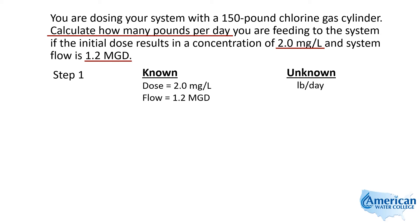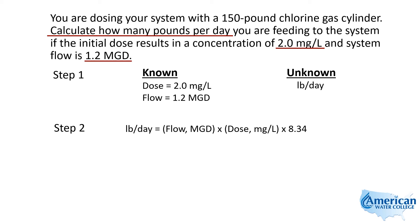Step two: we're going to use the formula that will solve this for us, and that's our pounds formula. The pounds formula says pounds per day is equal to our flow in MGD — million gallons per day — times the dose in milligrams per liter, times 8.34, which is how much a gallon of water weighs: 8.34 pounds per gallon.